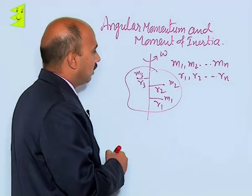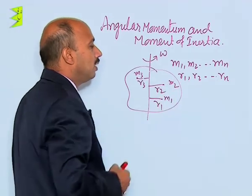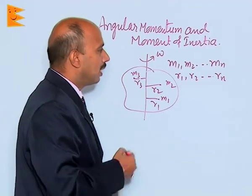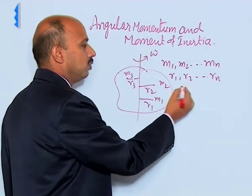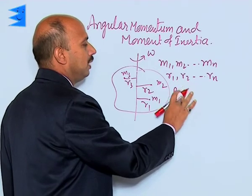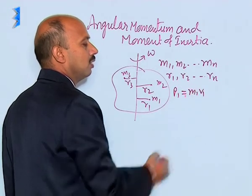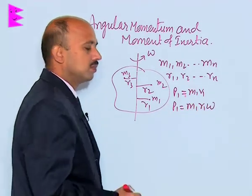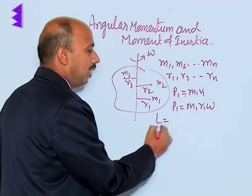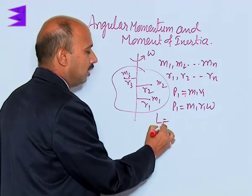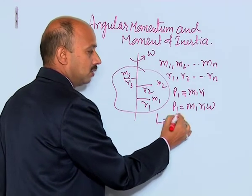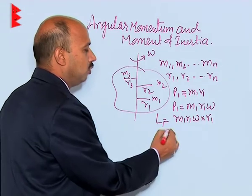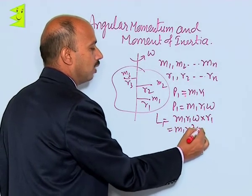Every particle has linear velocity v. We can write the linear momentum of each particle. For the first particle, p1 equals m1·v1, which can be written as m1·r1·omega. The angular momentum l1 equals m1·r1·omega multiplied by r1, giving m1·r1²·omega.